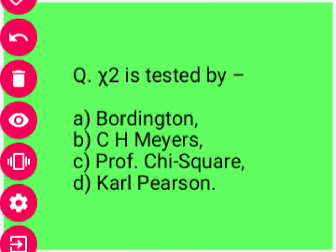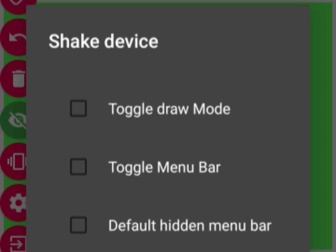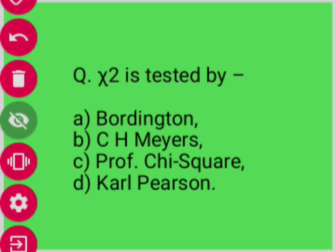Next question: Chi-square is tested by — options given include Professor Chi-square and Carl Pearson. Correct option hoga is question ka option D — Carl Pearson.